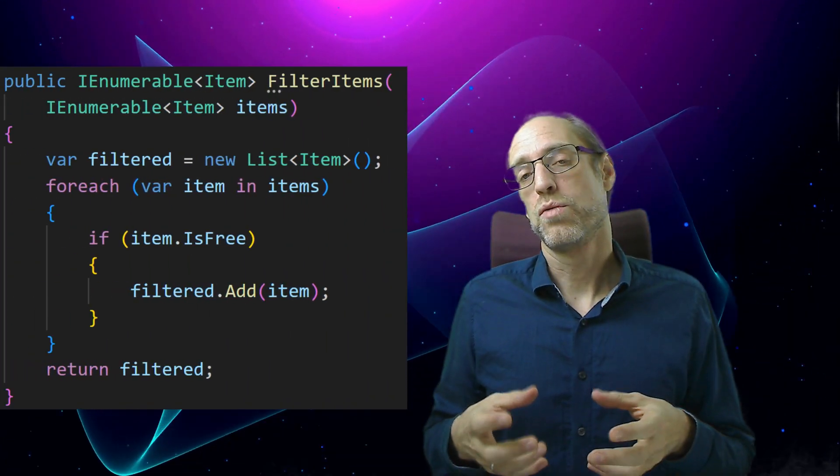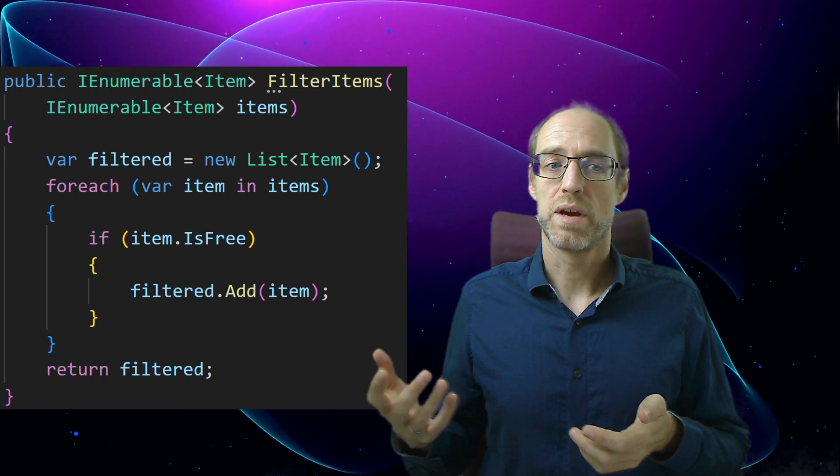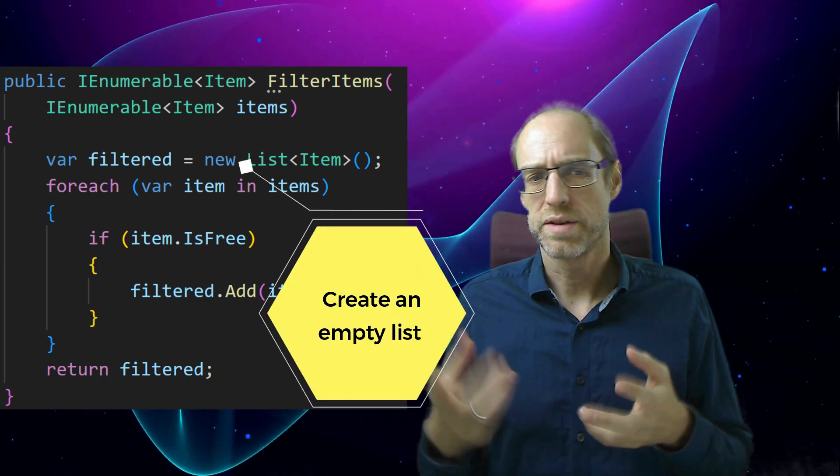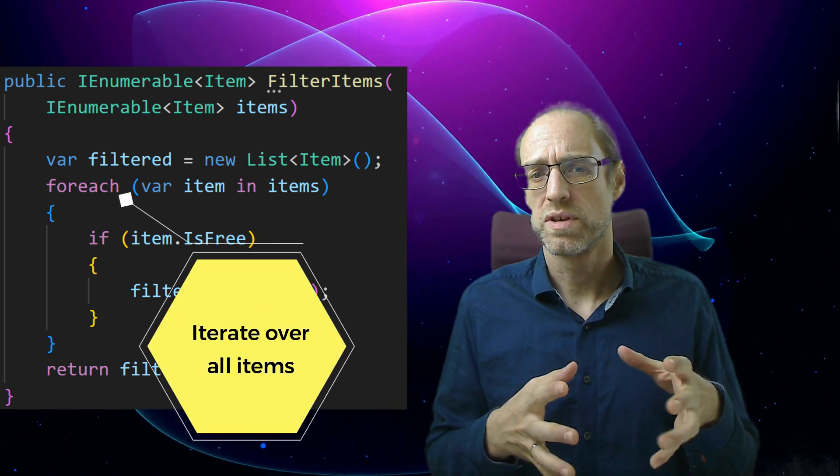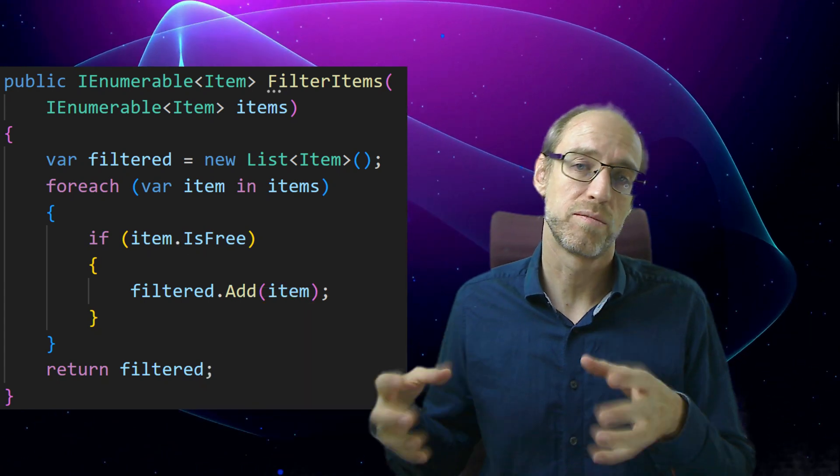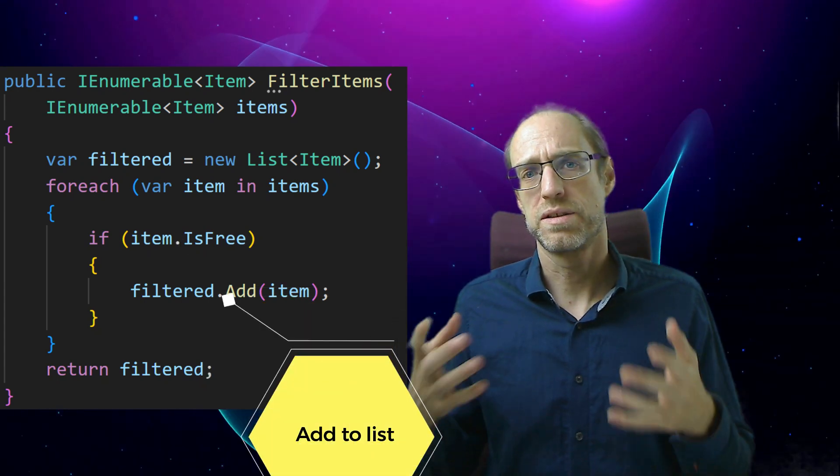Here's an example code. As a beginner, you would read this on level three like this: It creates an empty list to store items. Next, it iterates over all the items. It checks for each item if it is free and adds that item to the list. At the end, that list is returned.